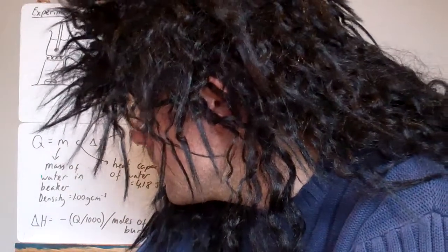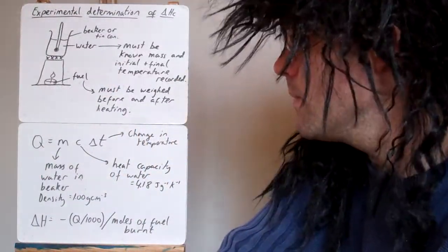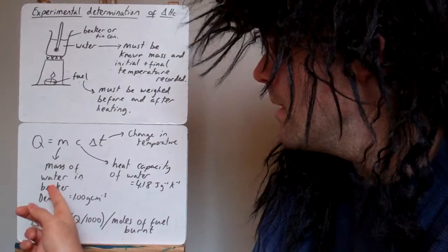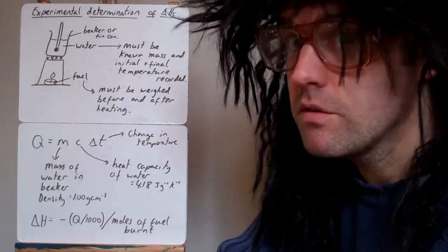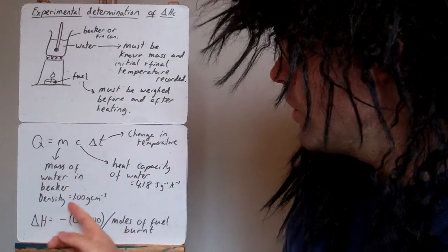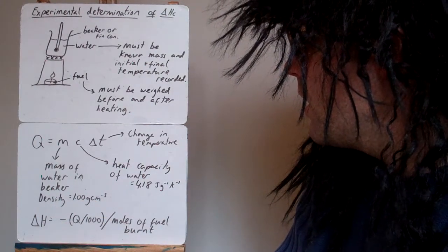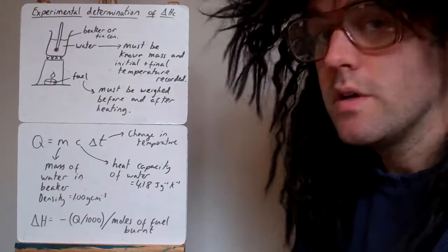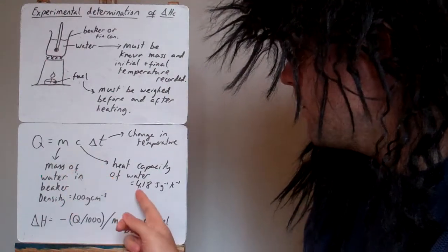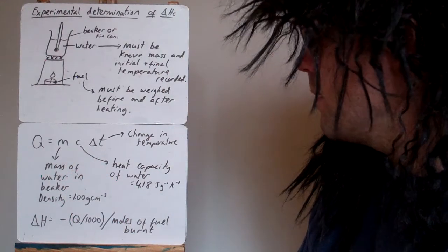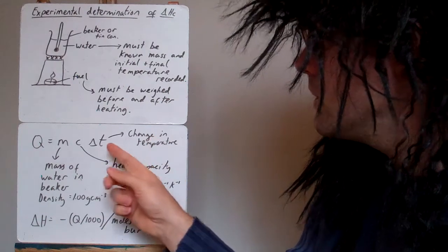So once we've got the information then, use the Q equals mc delta T. M is the mass of the water in the beaker, not the mass of the fuel. It's the mass of the water in the beaker. So if you know its volume, you'll know its mass because its density is one gram per centimeter cubed. The heat capacity of water is 4.18 joules per gram per kelvin and the temperature change is the delta T.